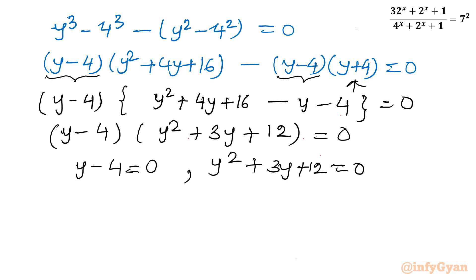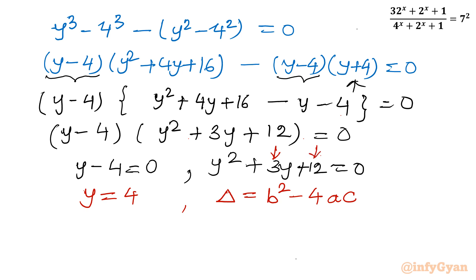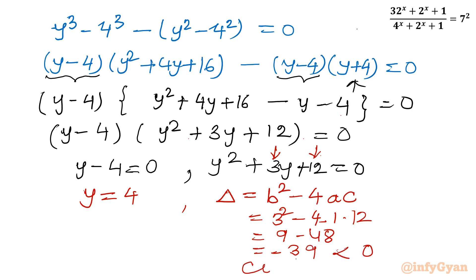From the first equation we get y = 4. For the quadratic y² + 3y + 12 = 0, let us find the discriminant: Δ = b² − 4ac = 3² − 4(1)(12) = 9 − 48 = −39. Since the discriminant is negative, only complex solutions come from this part, so we reject it as we are finding real solutions only.